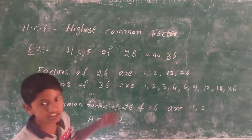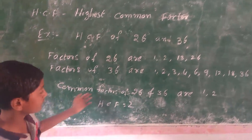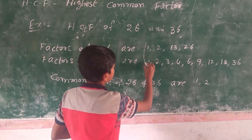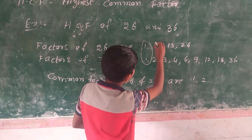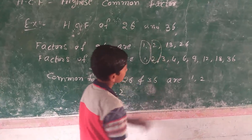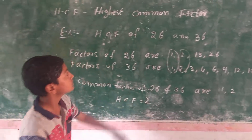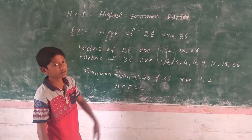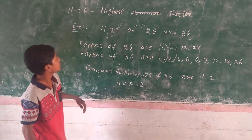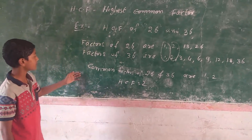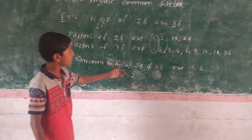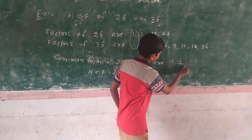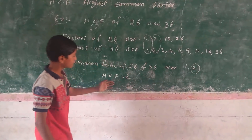The second step is to find common factors. Common factors of 26 and 36 are 1 and 2. The second step is over. The third step is to find the highest: the highest number among our common factors of 26 and 36 is 2. Hence, HCF is 2.